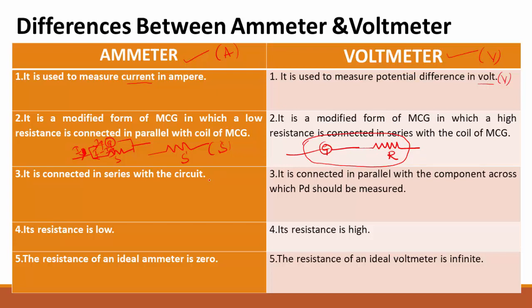Another difference is that ammeter is connected in series with the circuit, whereas voltmeter is connected in parallel with the component across which the potential difference is to be measured. The resistance of the ammeter is very low, while the resistance of the voltmeter is very high.